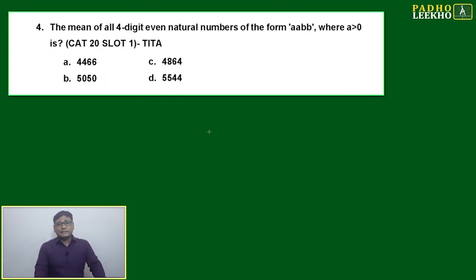Another good question that will attract you. You'll feel you can solve it with no issue, but you'll trap in the wrong way. The mean of all four-digit even numbers has many conditions given. How many conditions? All four-digit even natural numbers. First, it should be four digits. Second, natural numbers. Third, even. Fourth, in the form of aabb where a is greater than zero. This is last year's CAT paper, CAT 20. This is again TITA.